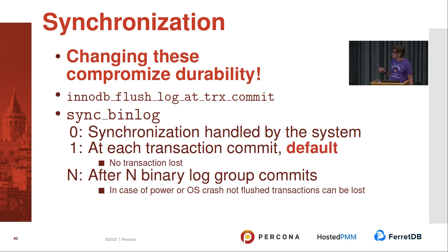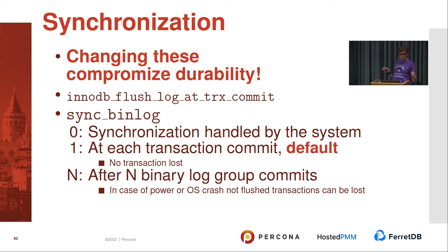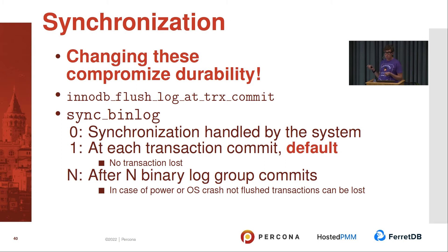Another option is sync_binlog — a replication option. The binary log is where the source server stores all changes before replicating to replica servers. The default means flushing per each transaction, which can sometimes cause performance issues. You can disable it, but instead I recommend setting binlog_group_commit_sync_delay after N binary log group commits, giving you some control over how many transactions you can lose. If you can't afford 1, put some positive number — it's not a crazy amount of data.